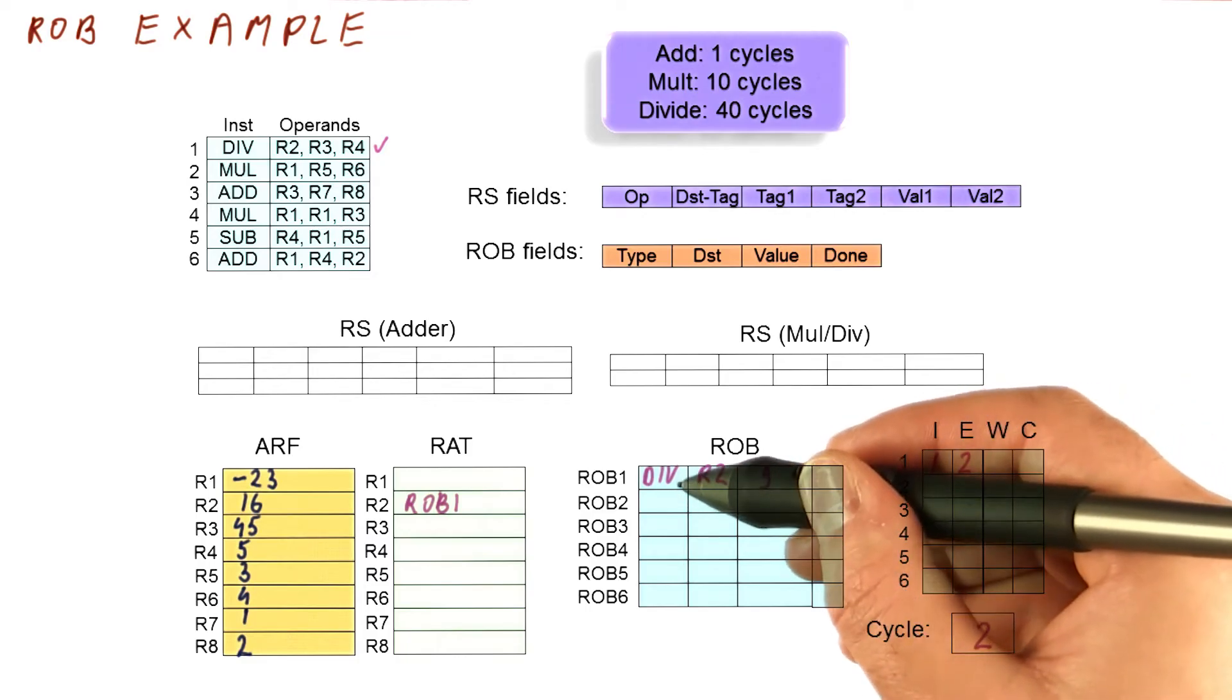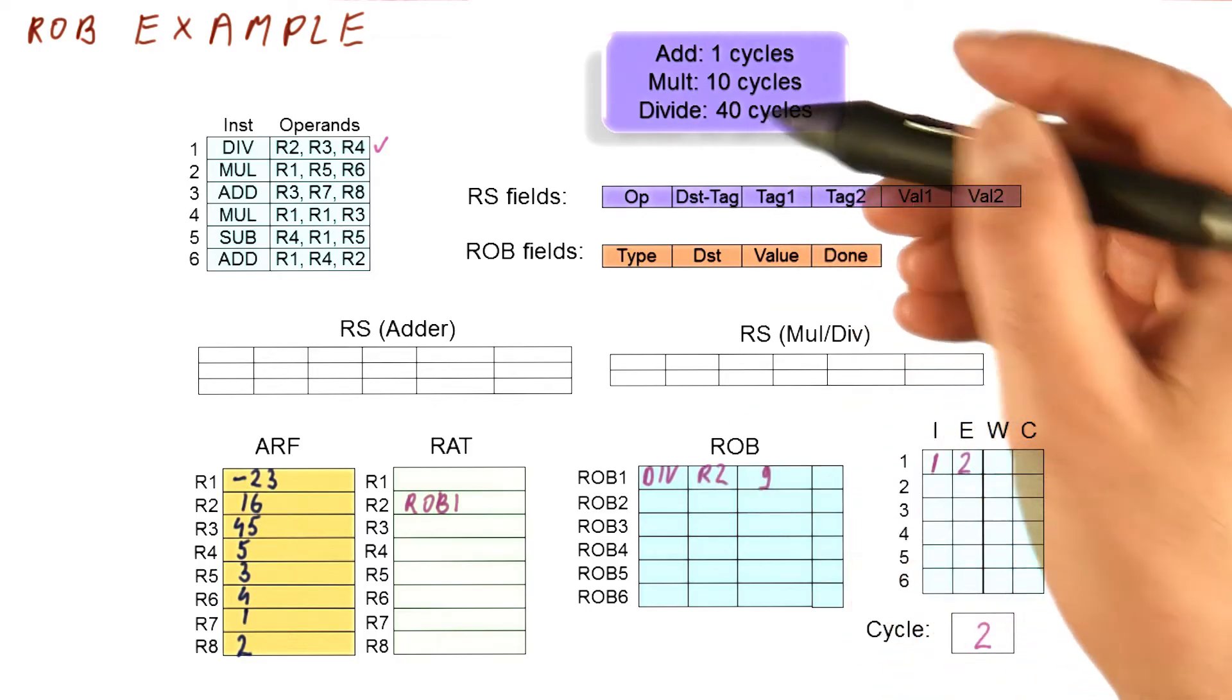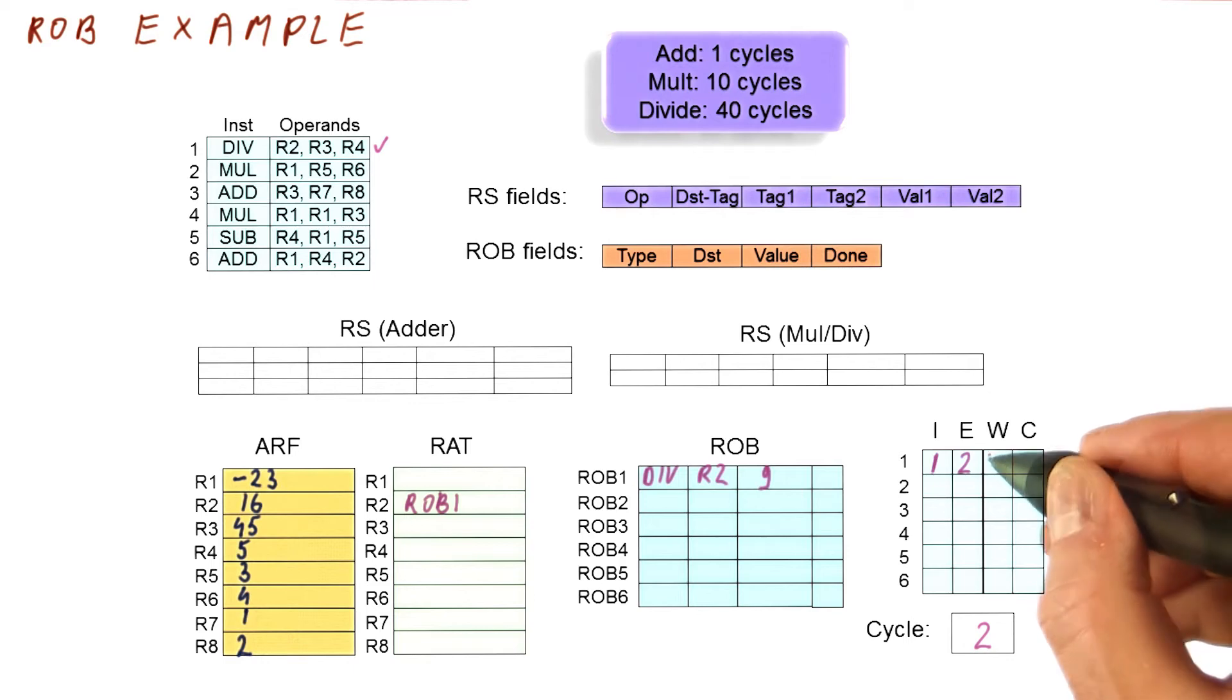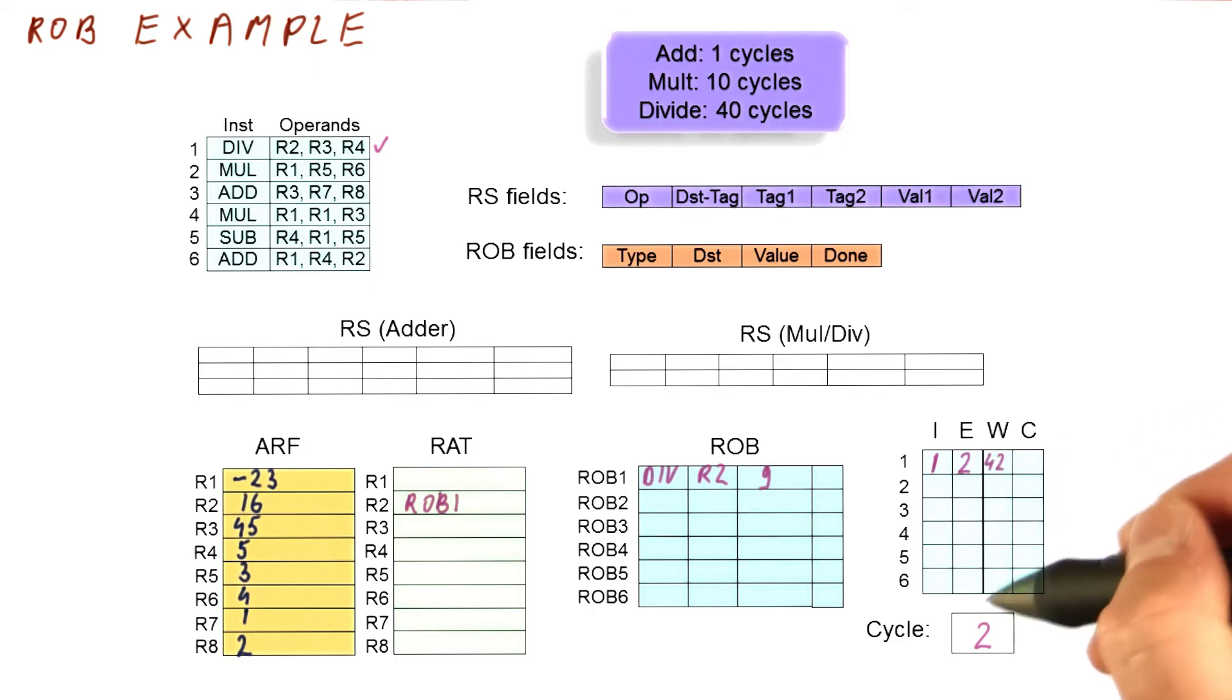So now it's going to happen, this is a divide. It's going to take 40 cycles to do things. So in cycle 42, which is the 41st cycle since we began executing, we try to write its result. That's going to be a long time in the future.